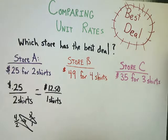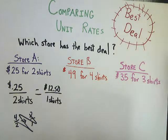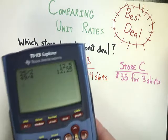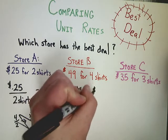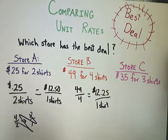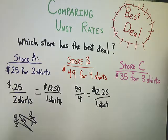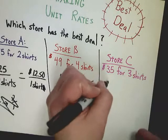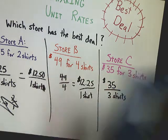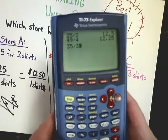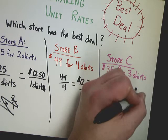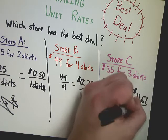And by the way, we're going to assume that all these shirts are of the same quality because otherwise you don't know who has the best deal. So $49 for four shirts, 49 divided by four gives me $12.25 per shirt. And in store C, store C is selling $35 for three shirts, 35 divided by three, 11 and two-thirds, so $11.67 more or less for one shirt.